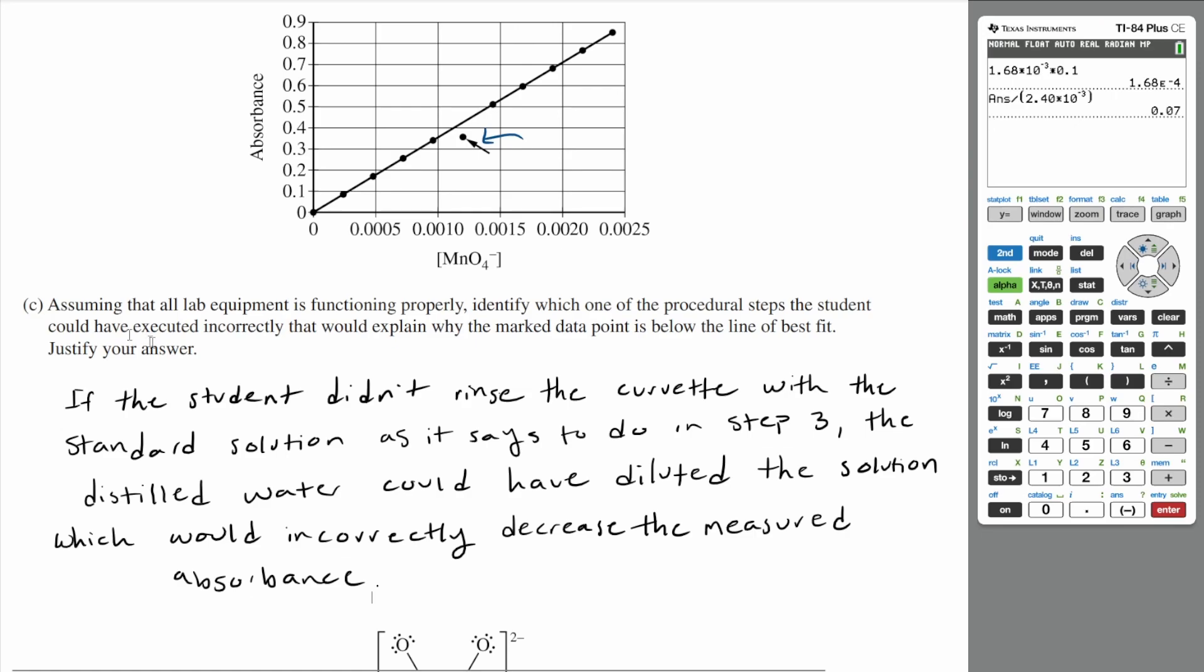So if the student didn't rinse the cuvette with the standard solution as it says to do in step three, the distilled water could have diluted the solution, which would incorrectly decrease the measured absorbance.